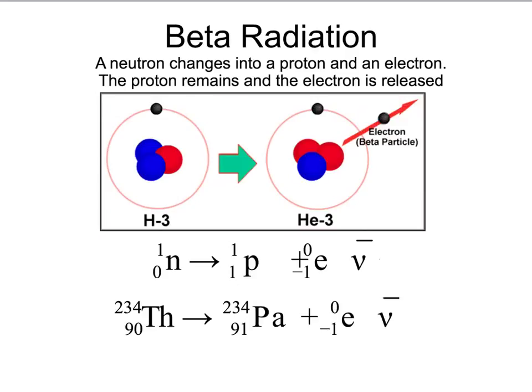Here, we're going to take a look at an example of beta radiation. Remember, in beta radiation, a neutron changes into a proton and an electron. The proton remains inside of the nucleus, and the electron escapes. If we take a look at this atom in this picture, we can see that happening.